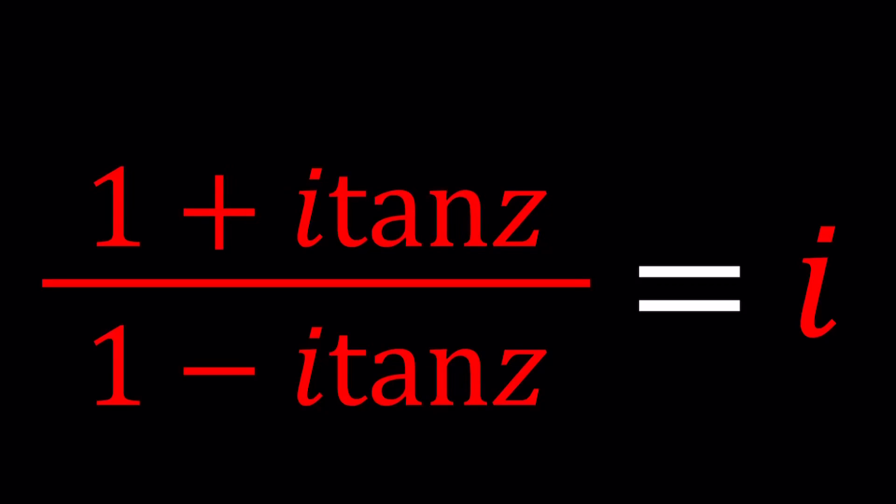Hello everyone, welcome to A plus P I. This channel is all about complex numbers, and in this video, we're going to be solving an interesting problem with complex numbers. We have 1 plus i tangent z divided by 1 minus i tangent z, and that is equal to i, and we're going to be solving for z values.